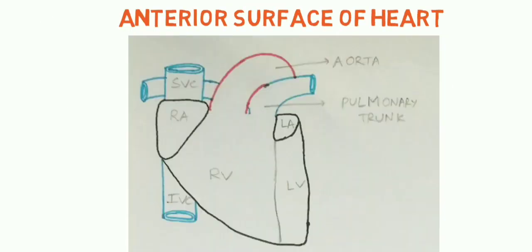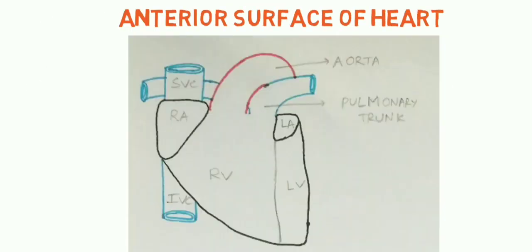Now let's see the anterior surface of the heart. In this picture you can see that most of the anterior surface of the heart is formed by the right ventricle, marked as RV, and parts of the right atrium marked as RA, left atrium marked as LA, and left ventricle marked as LV. You can also see the major vessels in this picture.